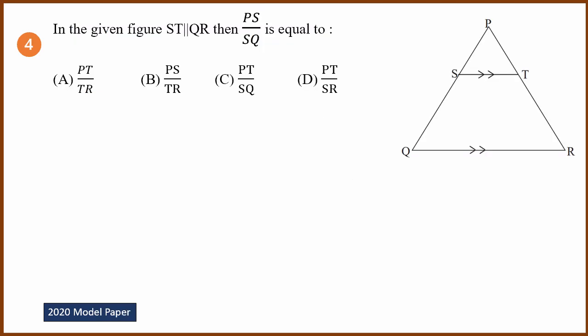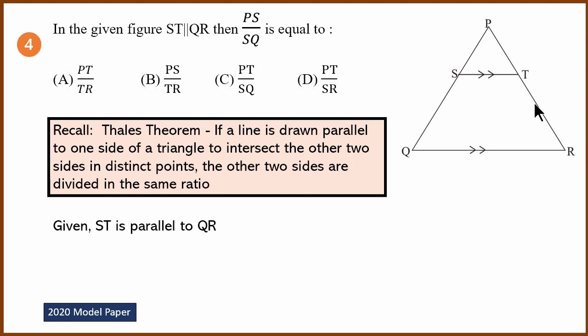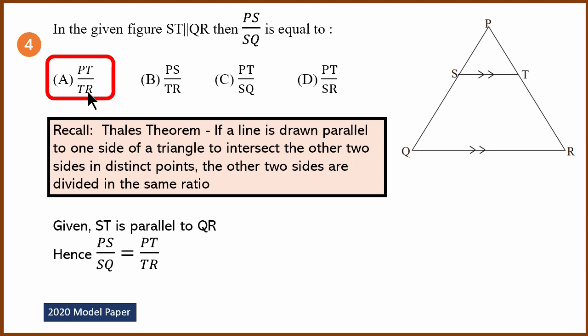Question 4 is another Thales theorem question. In the given figure, ST is parallel to QR. PS divided by SQ will equal PT by TR by Thales theorem. So the answer is option A. If lines are parallel, the ratio in the figure follows the same proportionality.